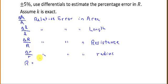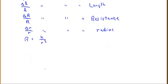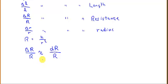Recall that capital R is given by k over little r squared. Now let's set up the relative error in resistance: delta R over R. We can approximate this using differentials — dR divided by R — where dR is the derivative of the resistance with respect to the radius, times the differential dr.